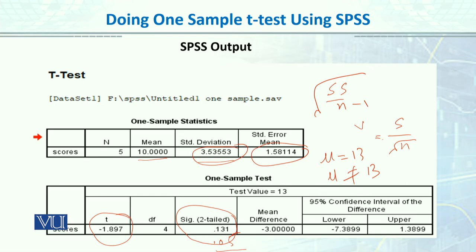But in this case, the value of p — isko p value kehte hain — so p value jo hai, woh greater than 0.05 hai. So 0.13 is greater than 0.05, is ka matlab hai ki hamaari value significant nahi hai. And if the value is not significant, we fail to reject the null hypothesis that population mean is 13. So actually we will keep this null hypothesis kyunke result significant nahi hai, aur p ki value greater than 0.05 hai.